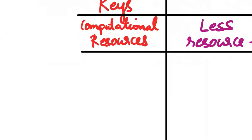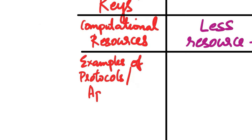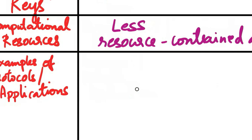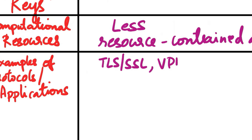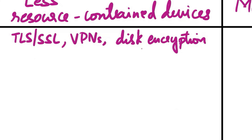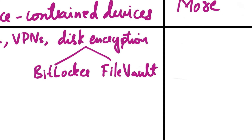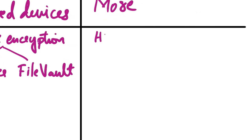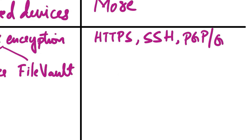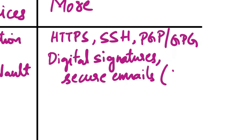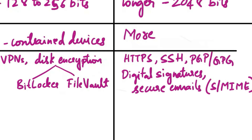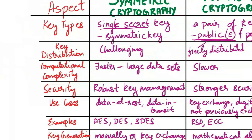The next aspect is examples of protocols or applications. Symmetric cryptography is used in protocols like TLS, SSL, VPNs, and disk encryption — examples include BitLocker and FileVault. Asymmetric cryptography is applied in HTTPS, SSH, PGP, GPG, digital signatures, and secure emails such as S/MIME.